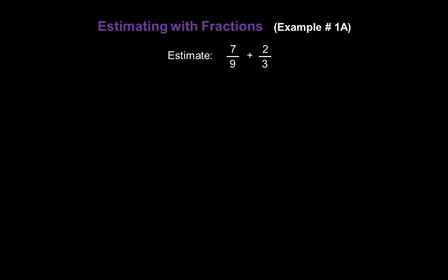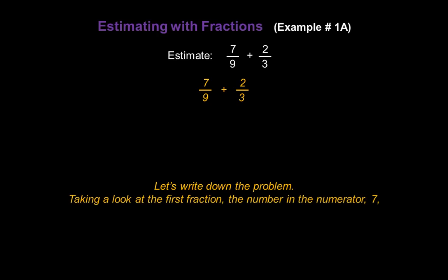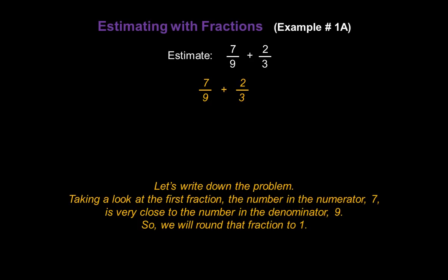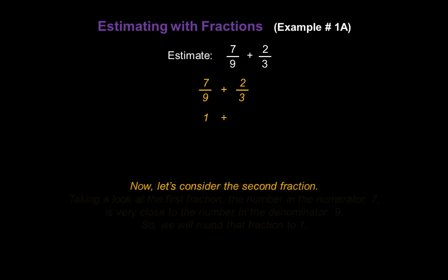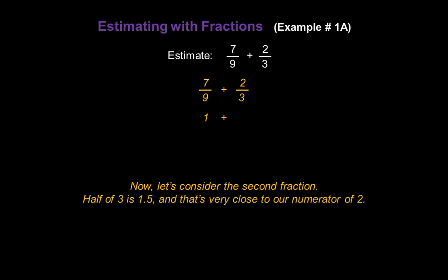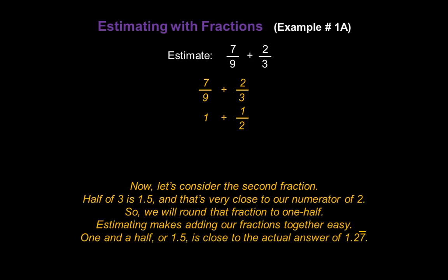Now let's work some examples of estimating with fractions. Let's estimate 7 ninths plus 2 thirds. Taking a look at the first fraction, the numerator 7 is very close to the denominator 9, so we're going to round that fraction to 1. Now let's consider the second fraction: half of 3 is 1 and a half, and that's very close to our numerator of 2, so we're going to round 2 thirds to 1 half. Estimating makes adding very easy: 1 plus 1 half is 1 and a half, or 1.5, which is close to the actual answer of 1.27 repeating. So our estimate is 1 and a half.